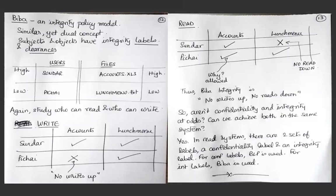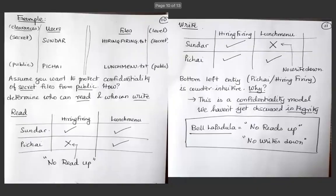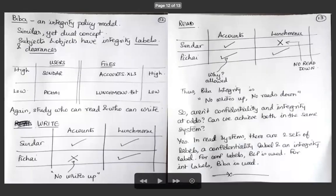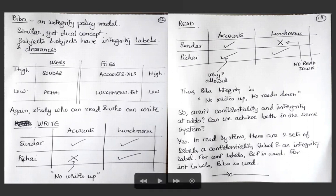Using the same company example: Sundar has high integrity clearance; Pichai has low integrity clearance. Accounts.xls stores financial data at high integrity (its correctness is critical), while lunch-menu.txt is a low-integrity file (if the menu is wrong, no harm done). When thinking about confidentiality, we first think about reads; when thinking about integrity, we first think about writes.